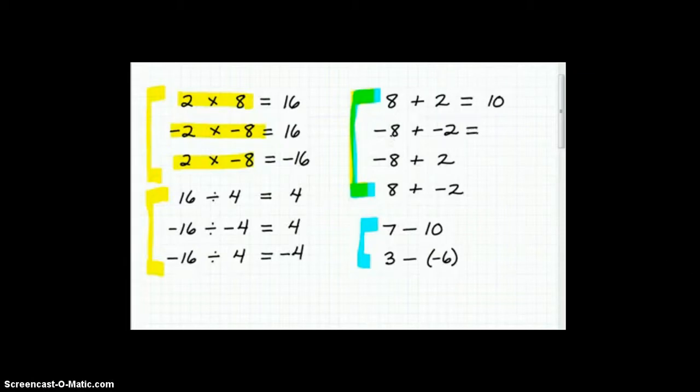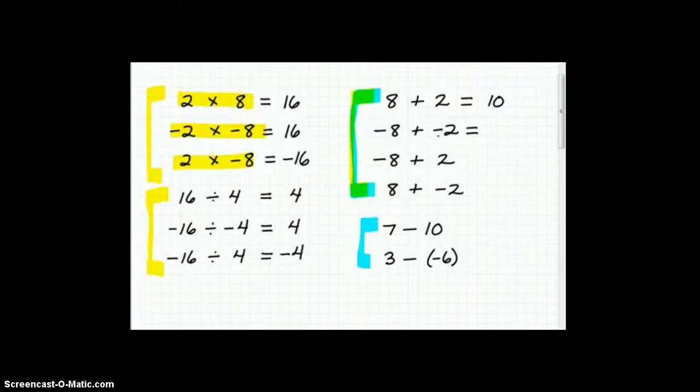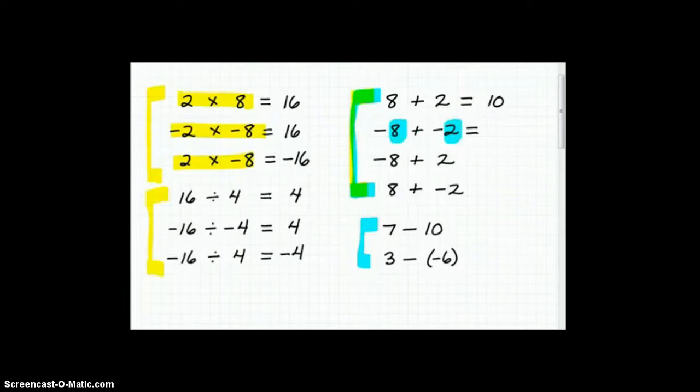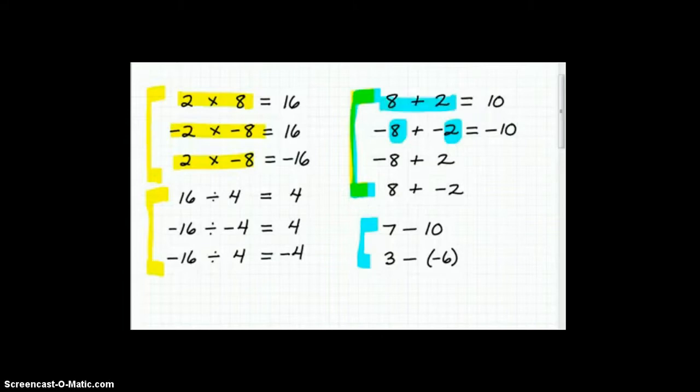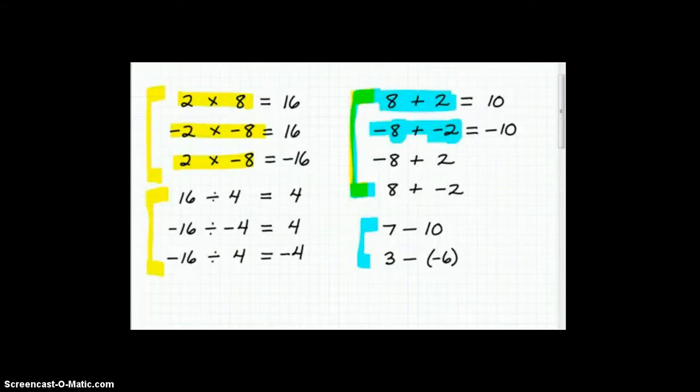Now, let's take a look at this. We have a negative 8 plus a negative 2. The signs are the same, so you're going to add these values right here and you're going to keep the same sign, so this is going to be negative 10. So right here, when you're adding numbers with the same sign, you can tell we're just adding the numbers and keeping the sign, so no problem there.